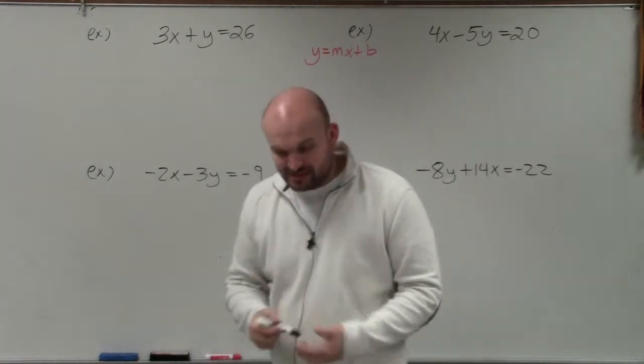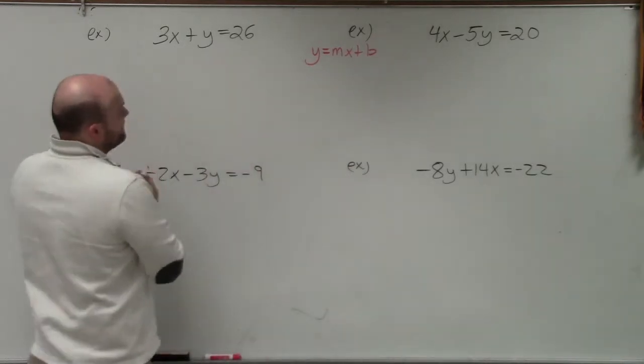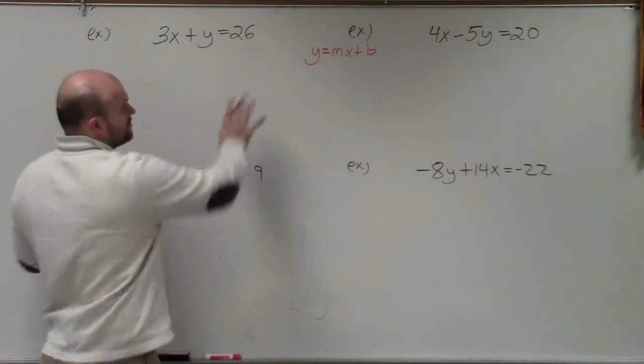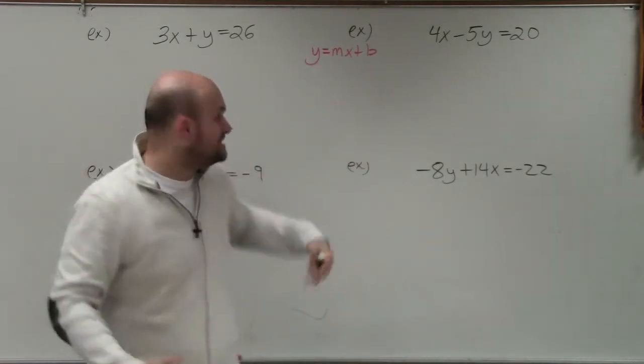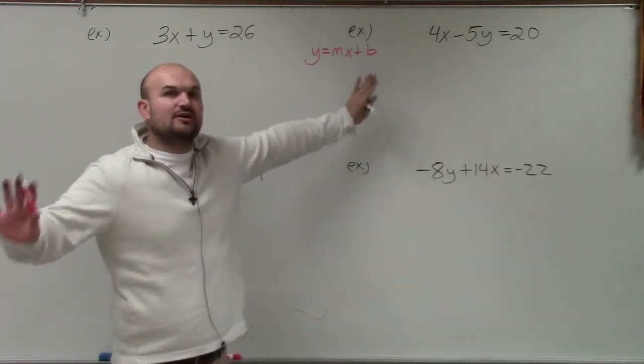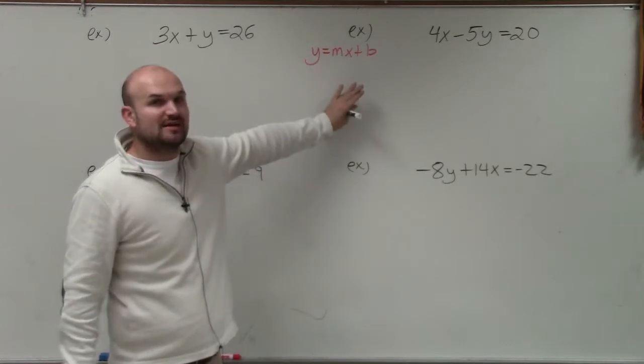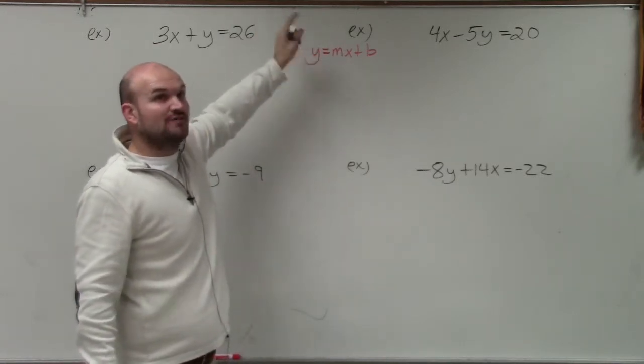So I chose four examples. When we're solving literal equations, the main important thing that we want to do is identify the variable solving. For all of these equations, we're going to be solving for y. Our end result is to get our variable y all by itself. You can see in my formula y equals mx plus b, which is the general equation of a line in slope-intercept form, our y is solved all by itself.